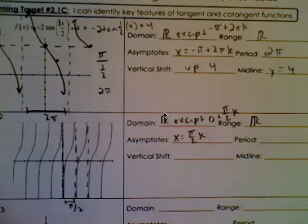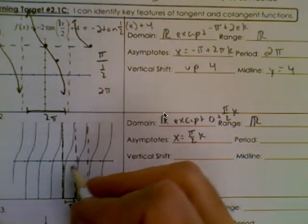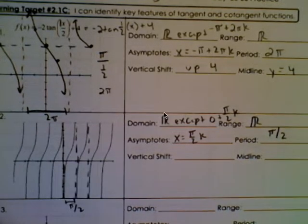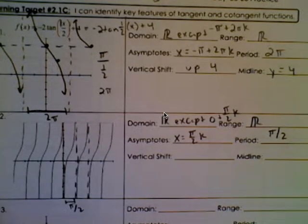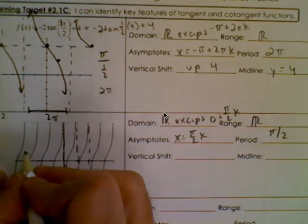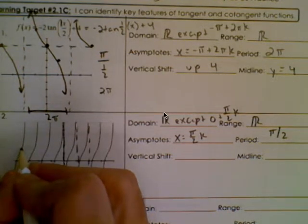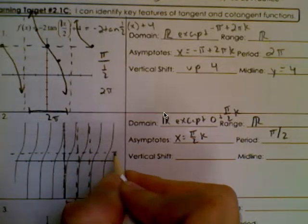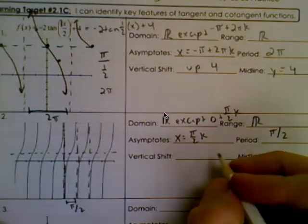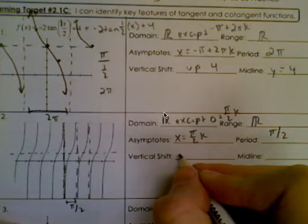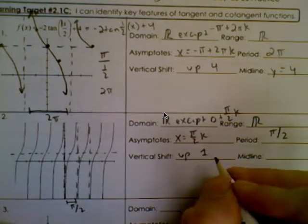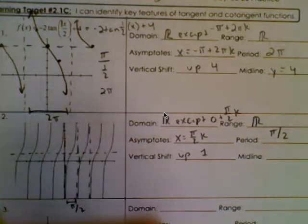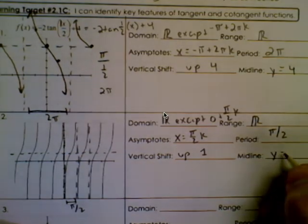The period is just how far apart the asymptotes are — that's how long it takes to repeat — so the period is pi over 2. The range is all real numbers. The vertical shift can be a little tricky, but looking at the graph, the bend appears to be around y equals 1, so the vertical shift appears to be up 1, and that's our midline.